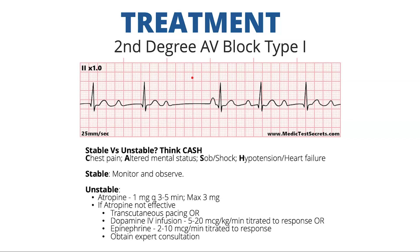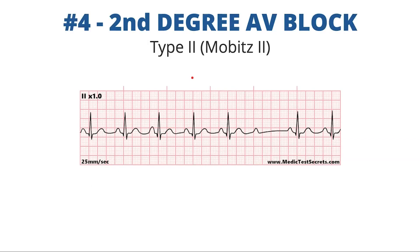Treatment is the same as the other bradycardic rhythms. Determine whether your patient is stable or unstable using CASH. If stable, monitor and observe. If unstable, you can give atropine, and if that's not effective, either pacing, dopamine infusion, or epinephrine.